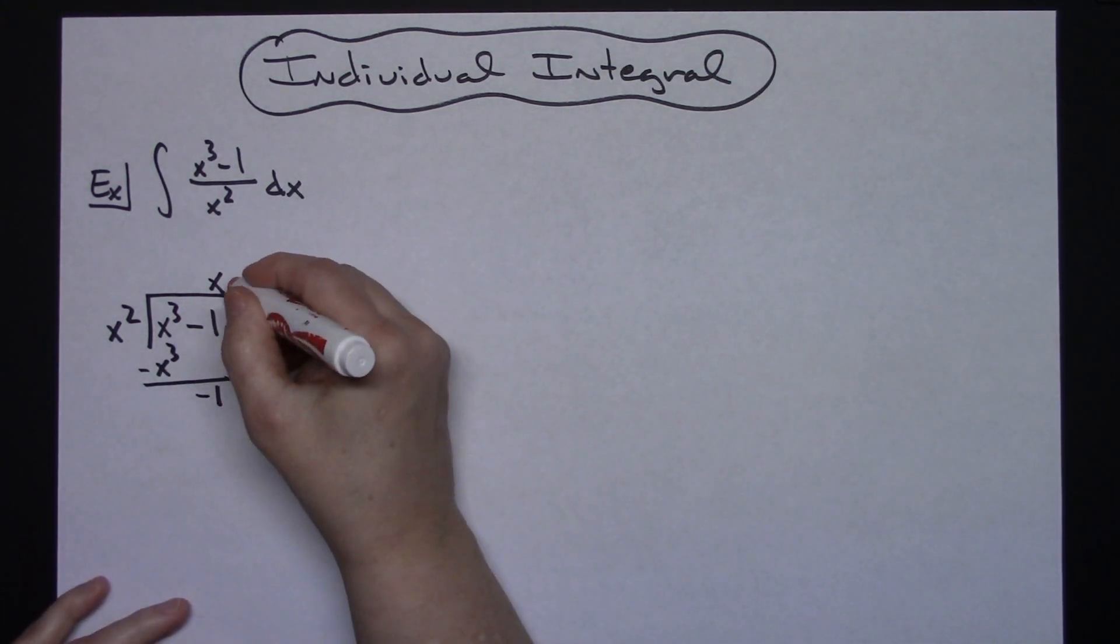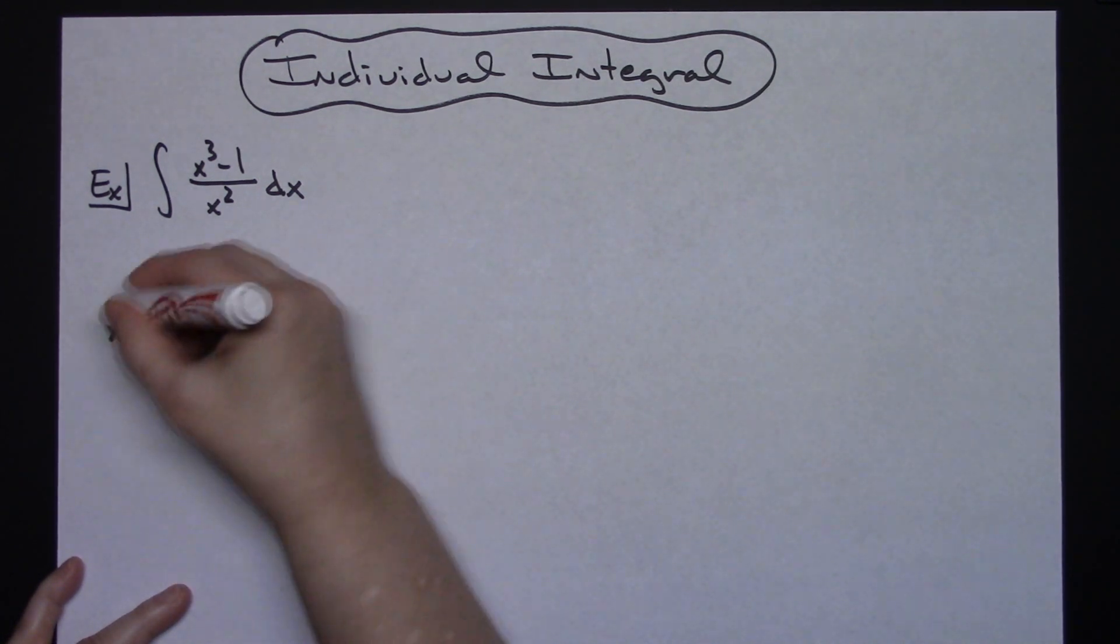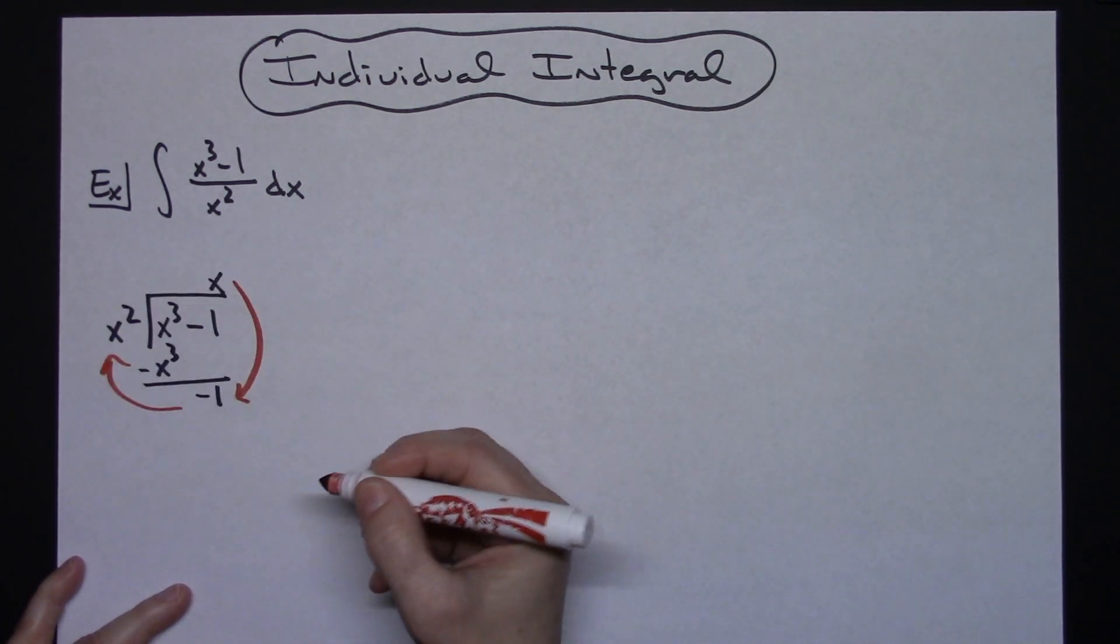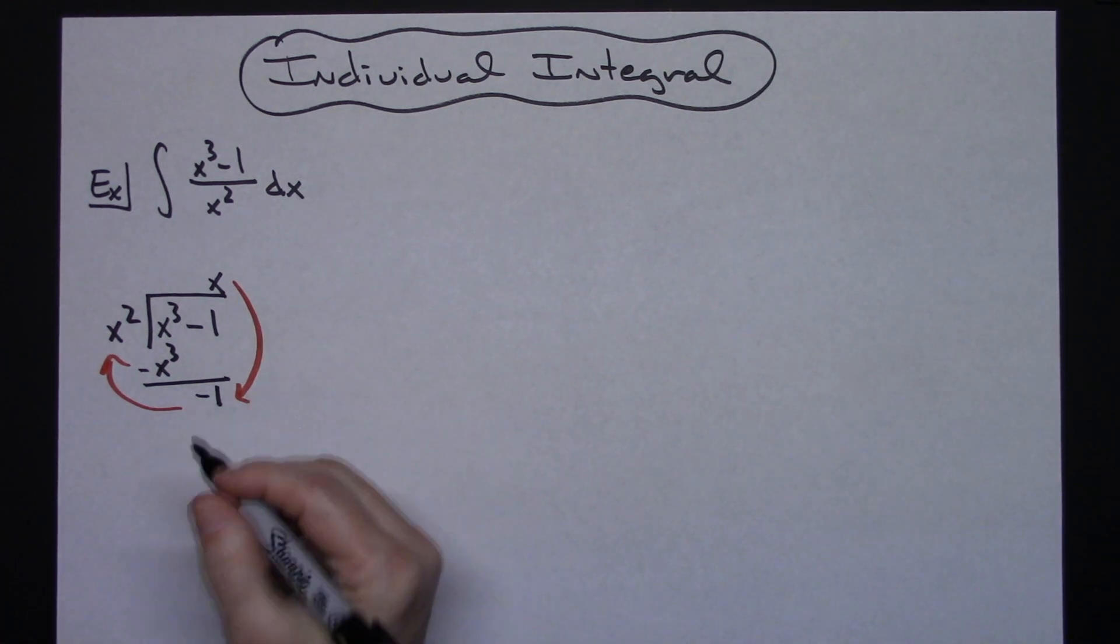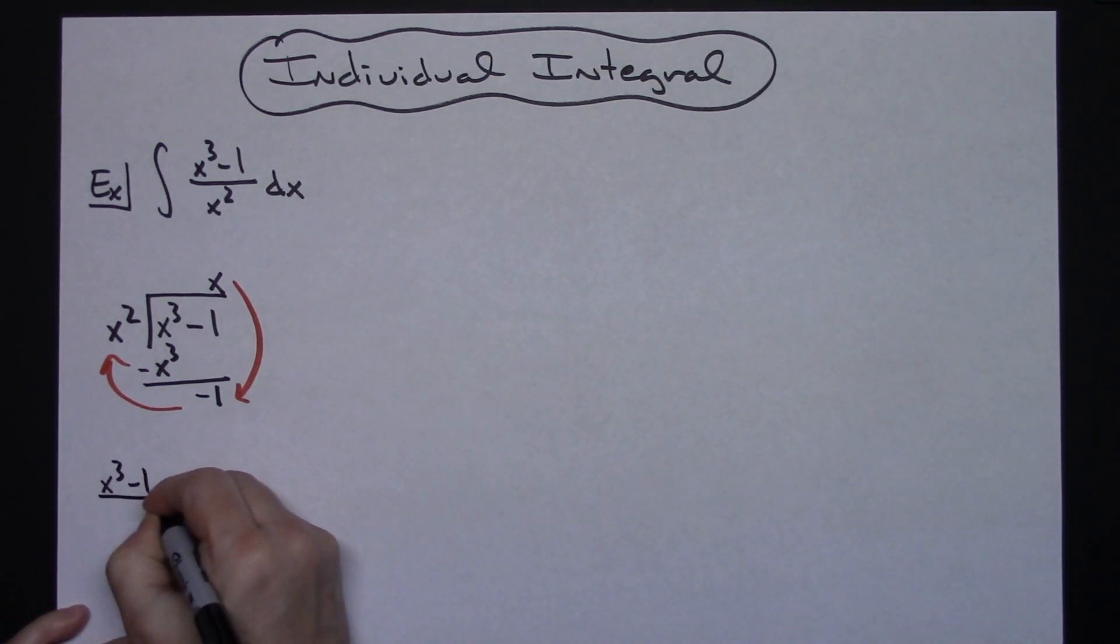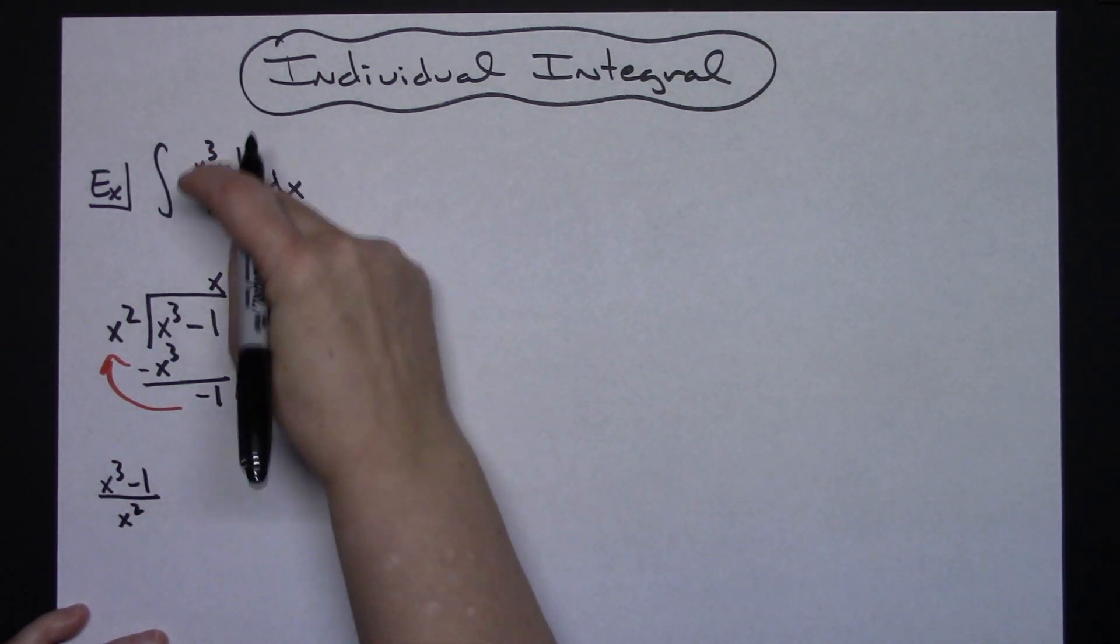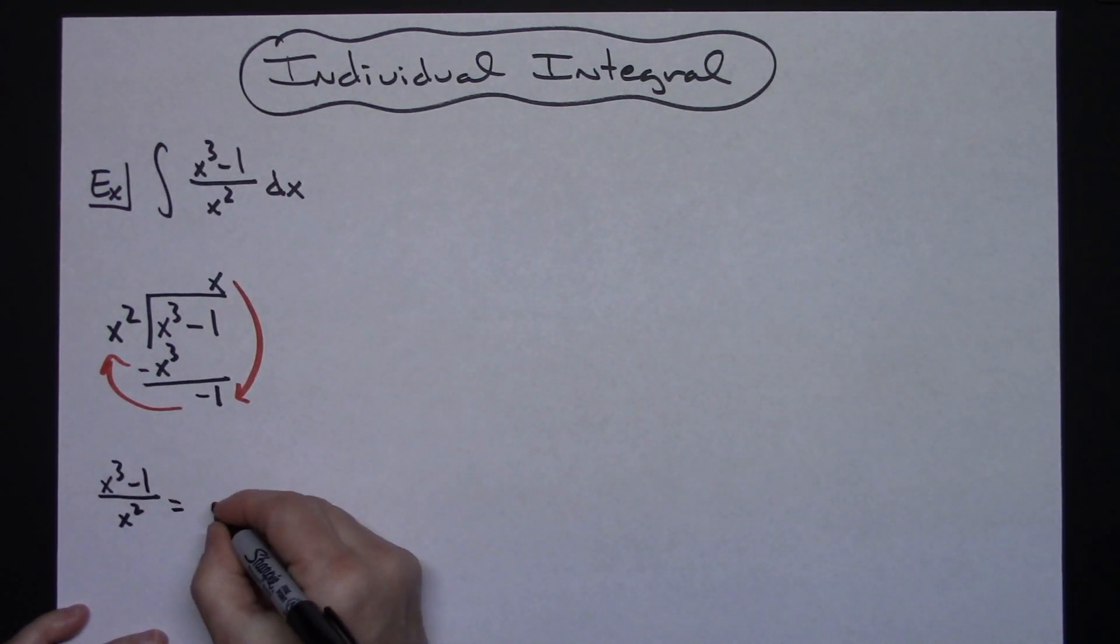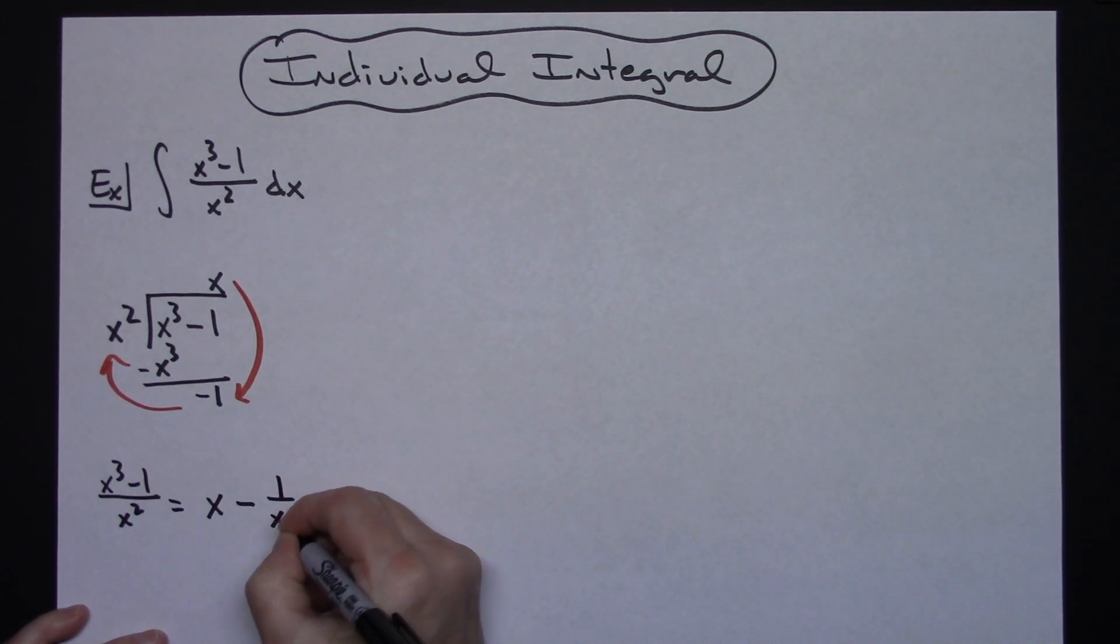I can then write an equivalent statement. Starting at the top and going clockwise around, I create my equivalent expression. So basically, x to the third minus 1 over x squared, which was my original expression, is equal to x minus 1 over x squared.